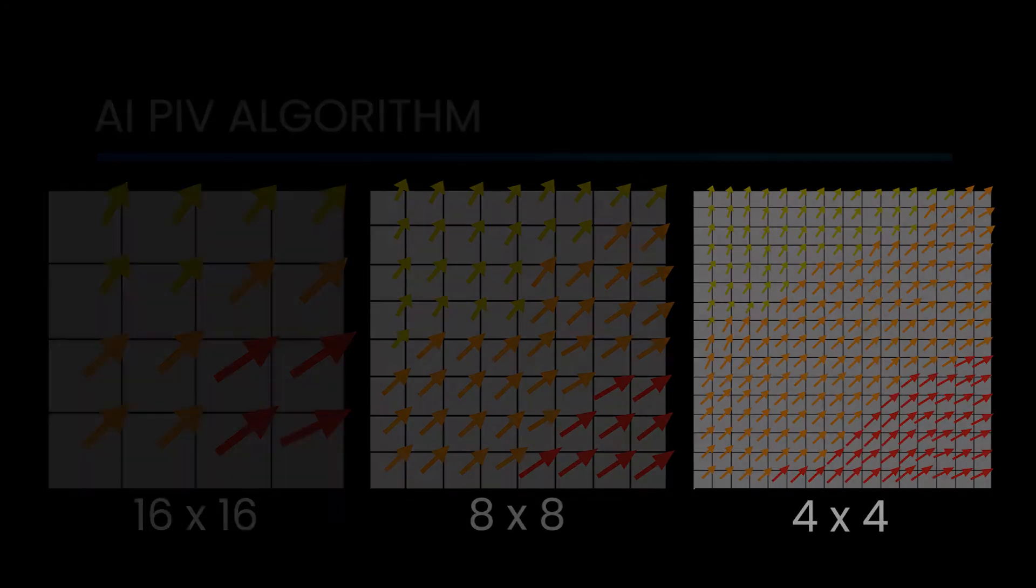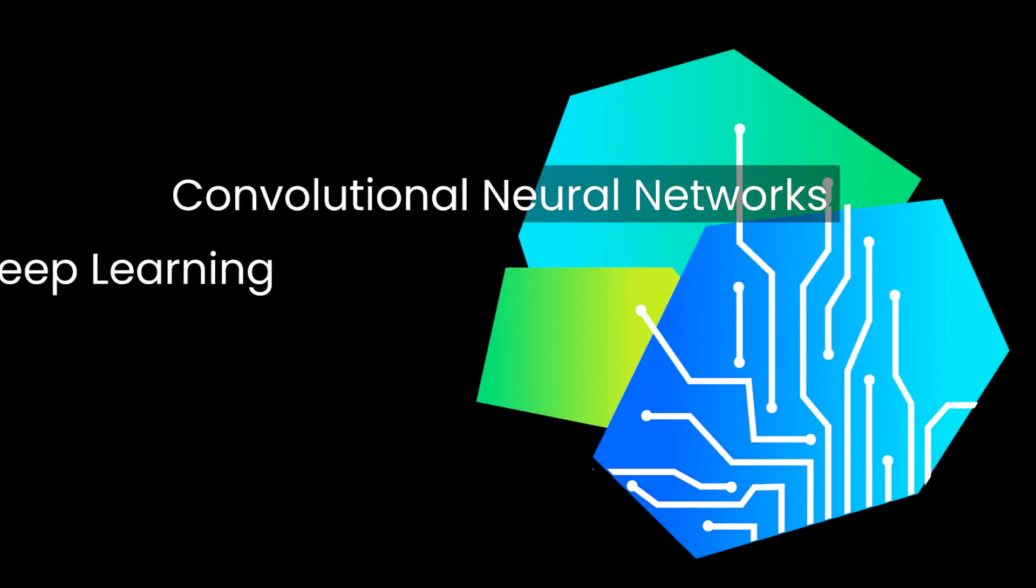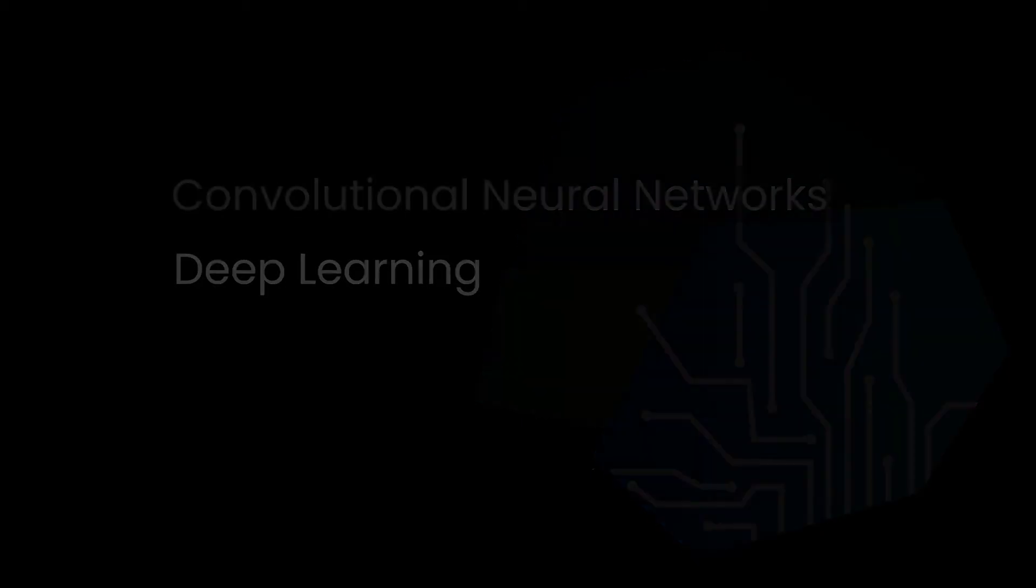As we can see, the AI PIV software, based on convolutional neural networks and deep learning, has been trained to calculate dense velocity fields in real-life experiments.